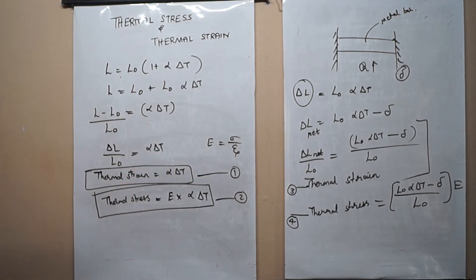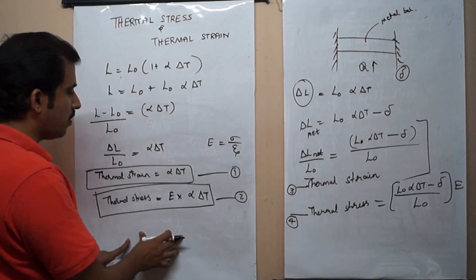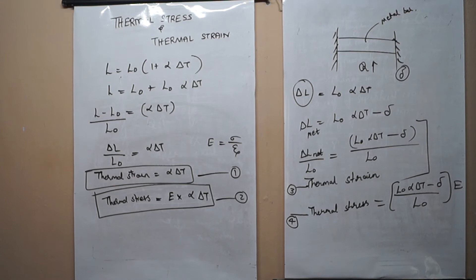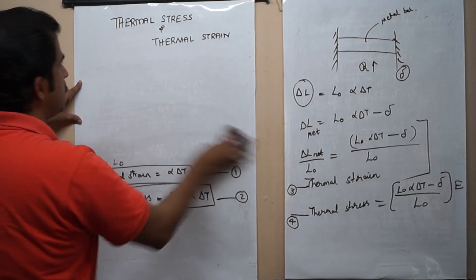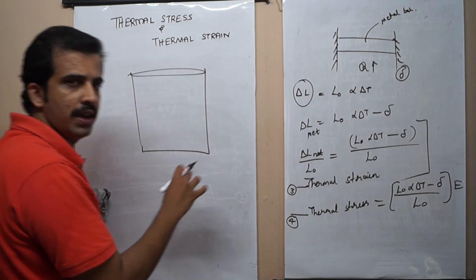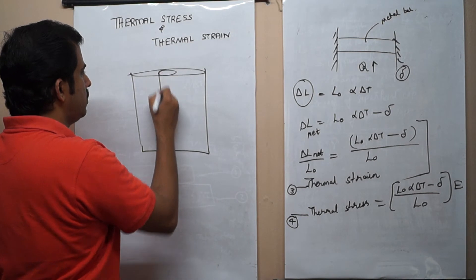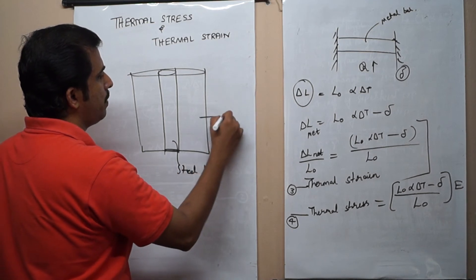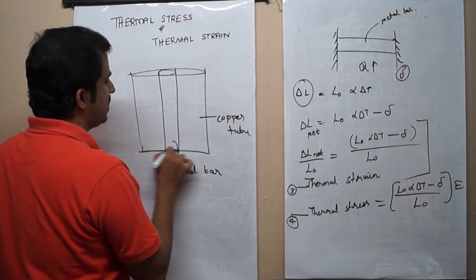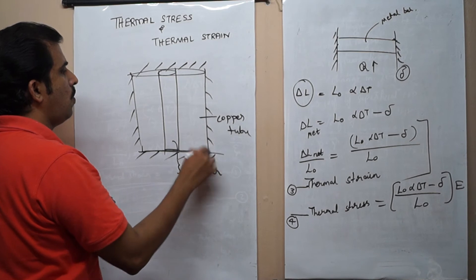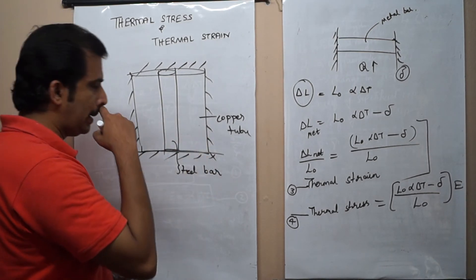Now I can study composite structures — thermal stresses in composite structures. A composite structure is made up of two types of materials. For example, consider a copper tube with a steel bar rigidly fixed inside it. The sides are rigidly fixed, so whatever deformation occurs in the copper will be equal to the deformation in the steel bar.